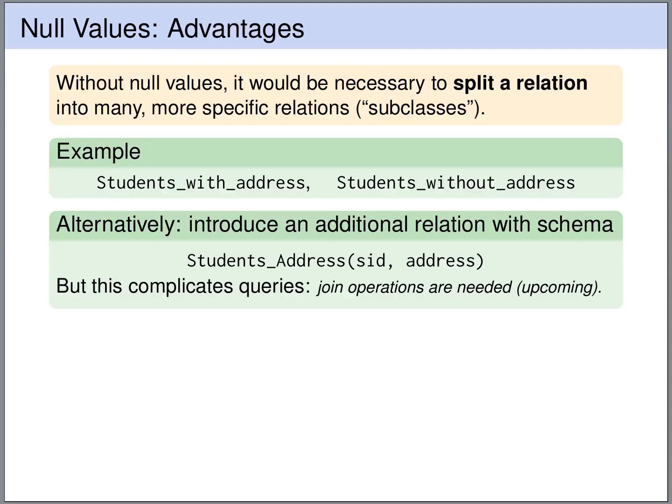So what are the advantages of using NULL values? Assume we would forbid NULL values. Then we would need to split many relations into a number of subclasses. For instance, think of the students relation. There, some students have an address and others don't have an address. If we forbid NULL values, then we have to split this table into two tables, students with address and students without address.